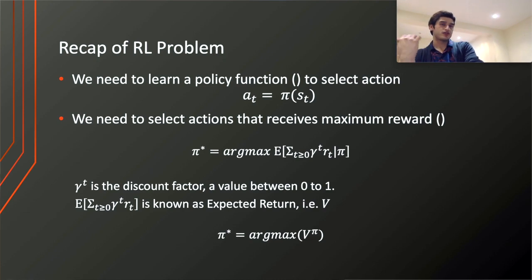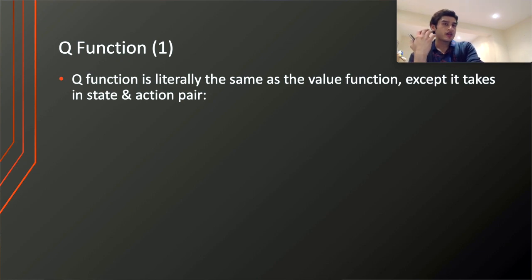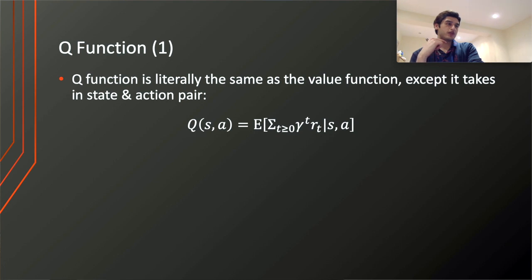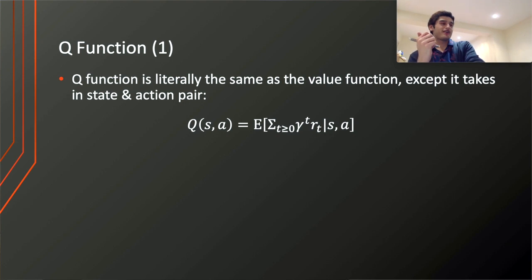So we introduce what is known as the Q-value function, also known as the action value function. What it takes in is the state-action pair. It basically defines the expected return starting at some state s, but then taking an arbitrary action a — this action a does not necessarily have to come from a policy, since it's arbitrary and can be random. But thereafter, we have to act according to some policy. So initially our network will take random actions, but after it has racked up some experiences and we learn from those, we actually have some policy — even though that policy will be weak. The Q-value function, or action value function, is what we use in the DQN.